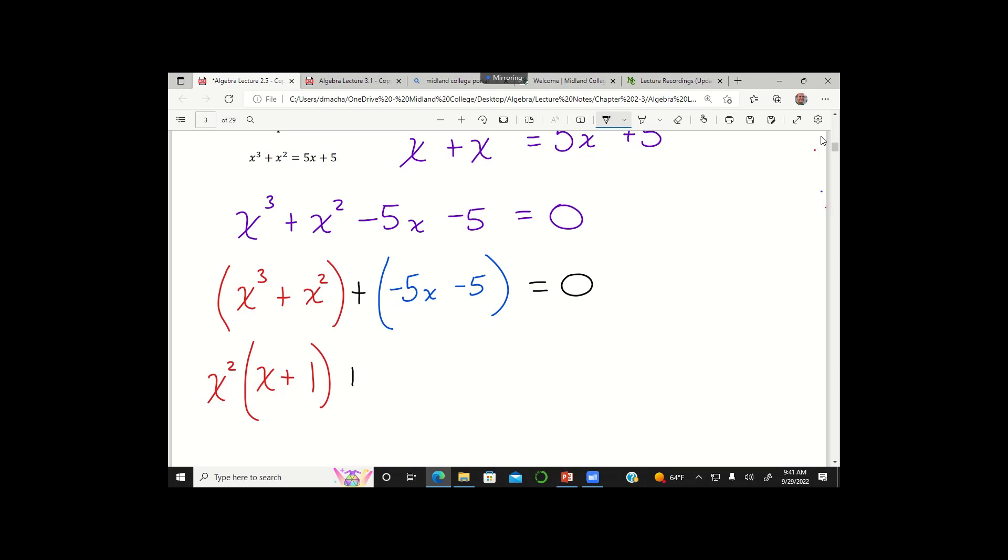And then for this second group here in blue, if I want to factor out a greatest common factor, I should factor out negative 5. And factoring out that negative 5 leaves me with x plus 1.